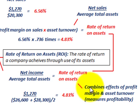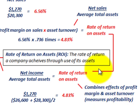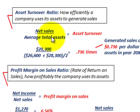This combines the effects of both the profit margin and our asset turnover, and that measures our profitability. Let's go through these one more time. Asset turnover ratio: net sales for the period divided by the average total assets.